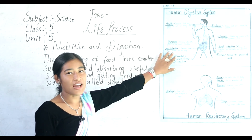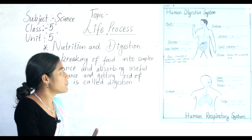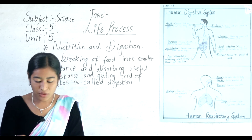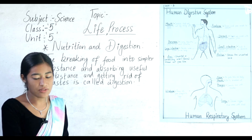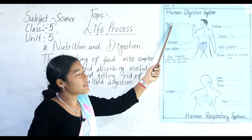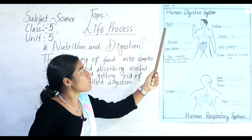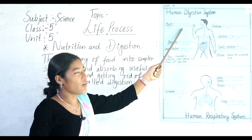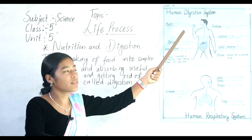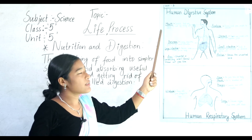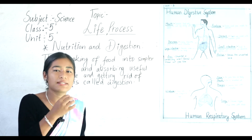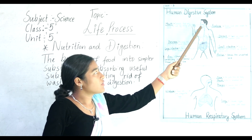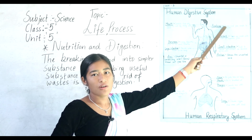Now, all of you look at this chart. Here is the diagram of the human digestive system. This figure is also given in your book on page number 53. The first part of the human digestive system is the mouth. The mouth helps to grind food and makes it soft by mixing it with saliva. The next one is the food pipe, which passes food from the mouth to the stomach.